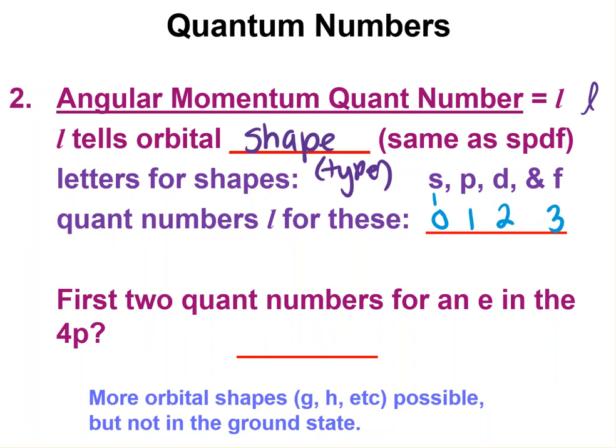So for example, what are the first two quantum numbers for an electron in the four p? Well, the four is just the principal energy level, and then for p we use one. So those are the first two quantum numbers for that electron in that sublevel.